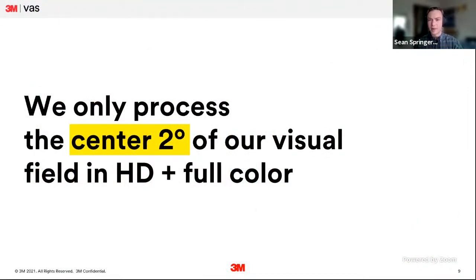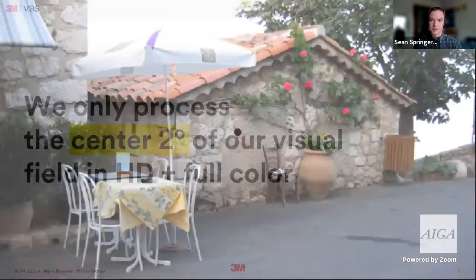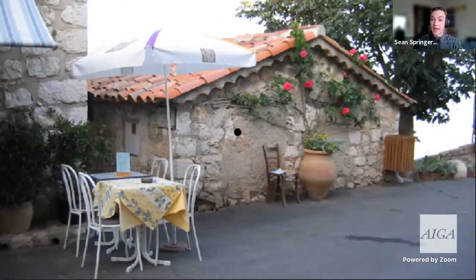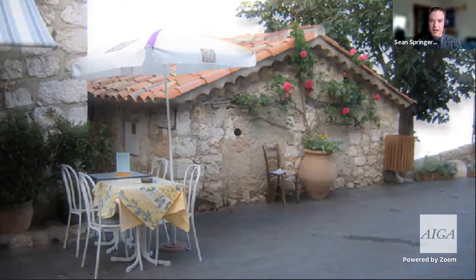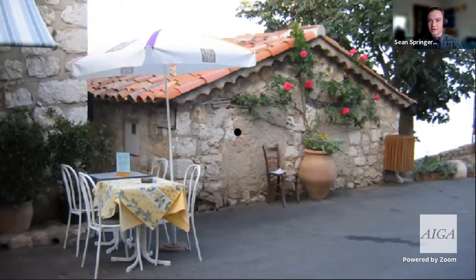We can only see about two degrees with any single eye movement at any one time. So what we think we see at first glance is a whole scene, but what we actually see is about the size of our thumbnail held at arm's length — that nail is two degrees. So why do we think we see the whole scene? In essence, our brain cheats a little bit.